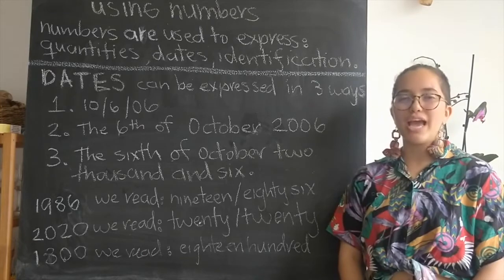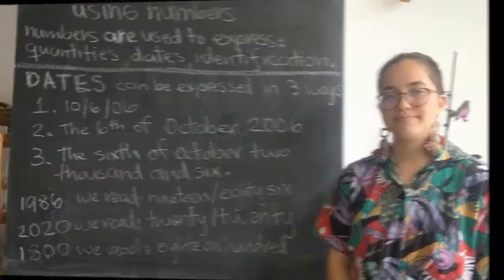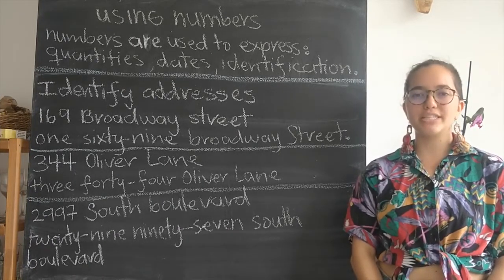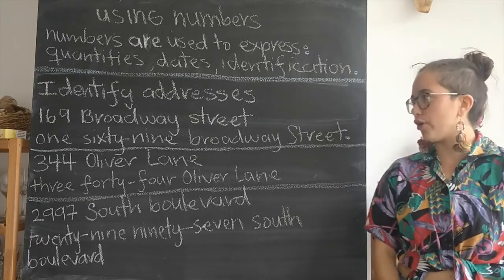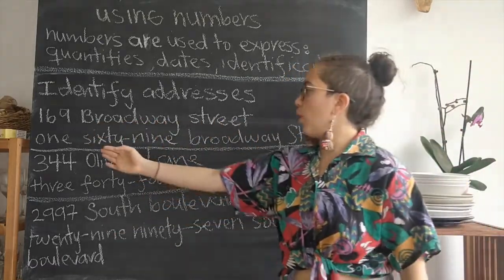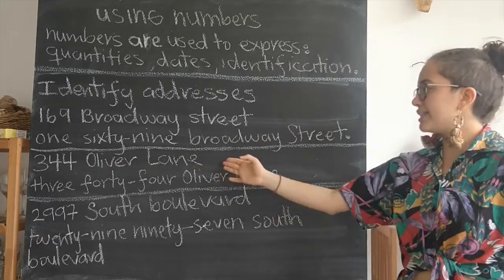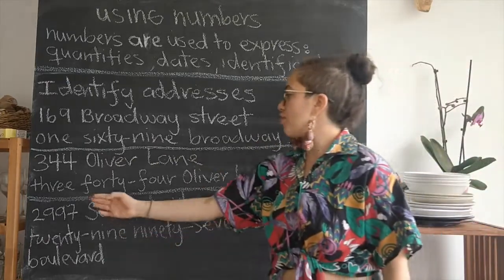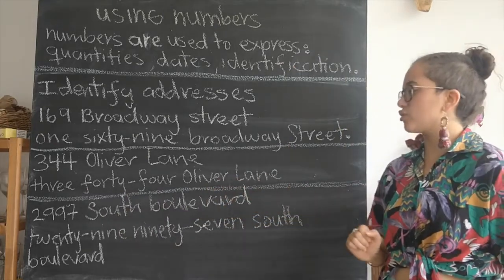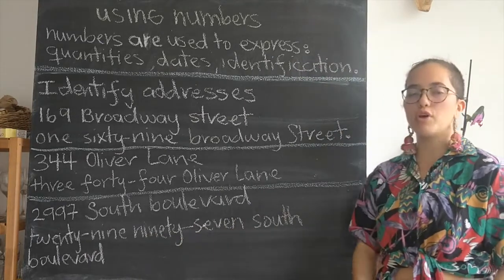Now let's look at how we can identify addresses and telephones. Numbers can also be used to identify addresses. For example, we would say this address as 169 Broadway Street. This address we would say 344 Oliver Lane. And this address we would say 2997 South Boulevard.